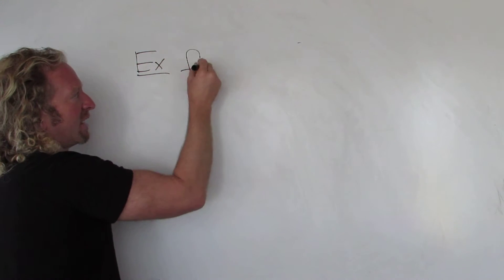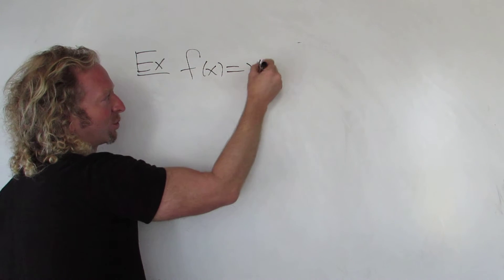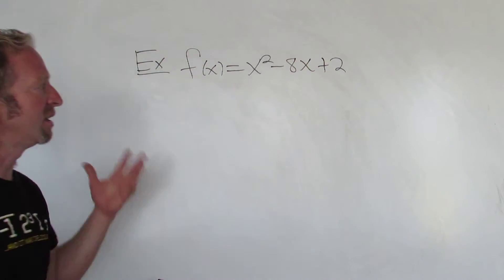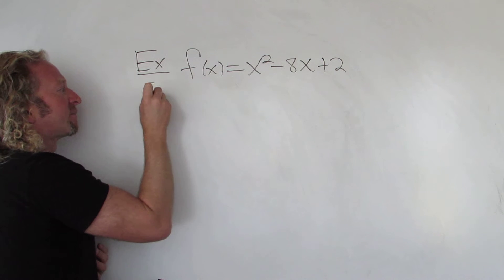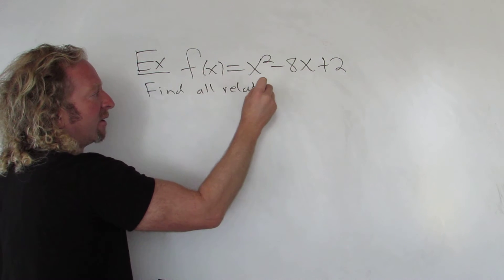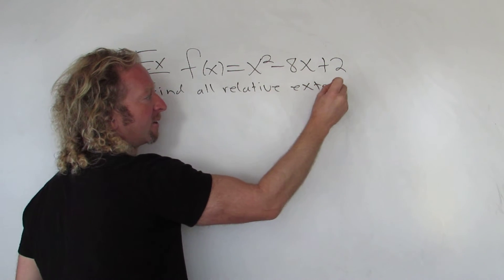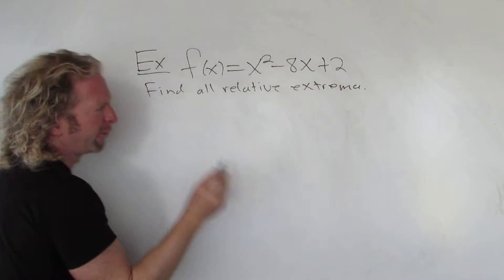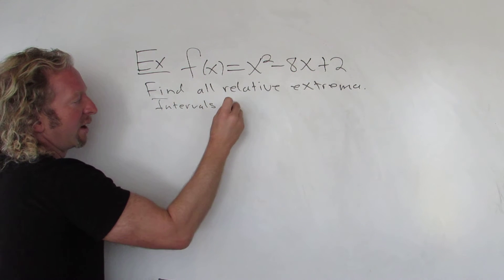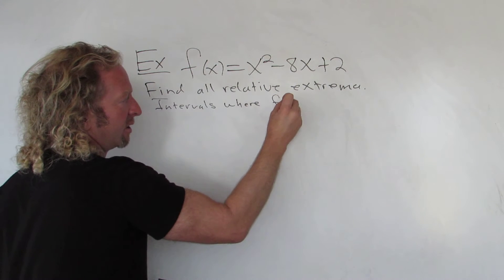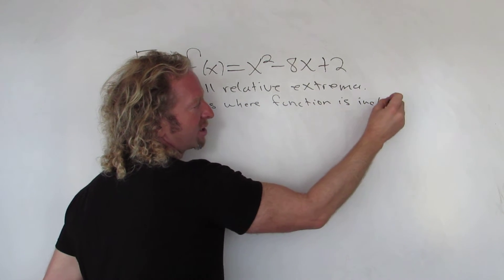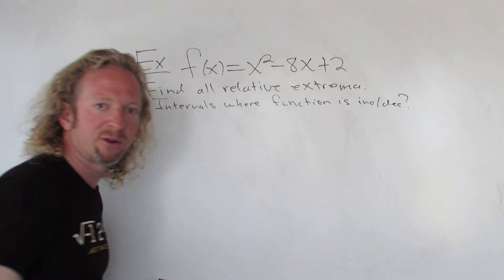So we have a function f of x equals x squared minus 8x plus 2. The question is to find all relative extrema and also find the intervals where the function is increasing or decreasing.